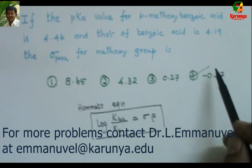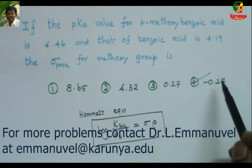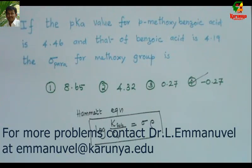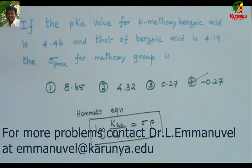The fourth option is minus 0.27. You may know that for an electron-donating group the sigma value will be negative, and for an electron-withdrawing group the sigma value will be positive. The magnitude of sigma is at most 0.6, so it cannot be as large as 0.8.